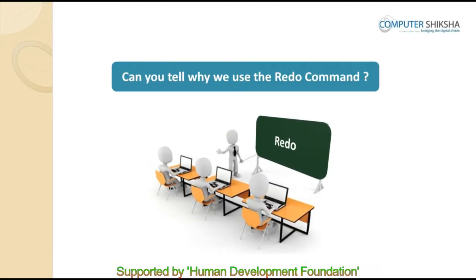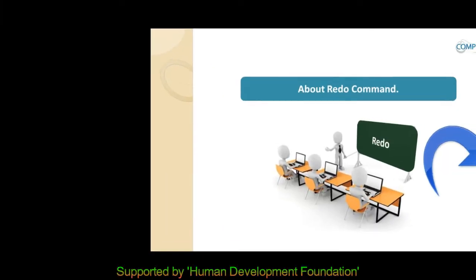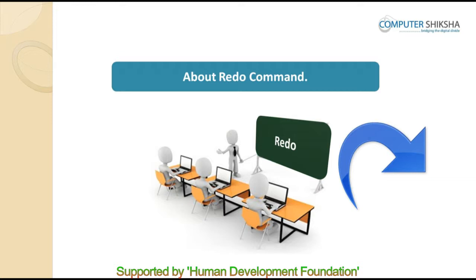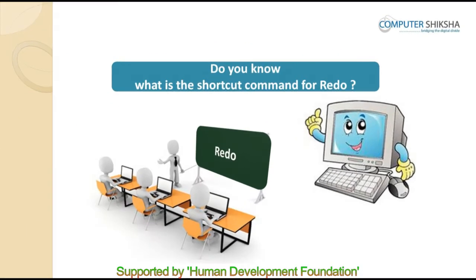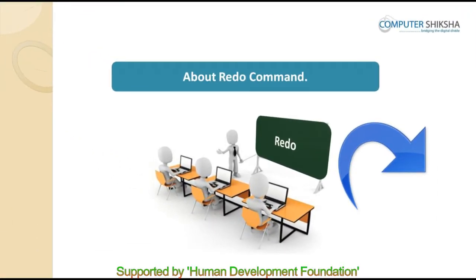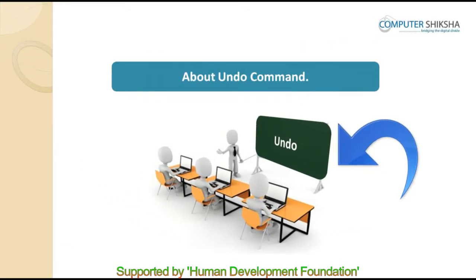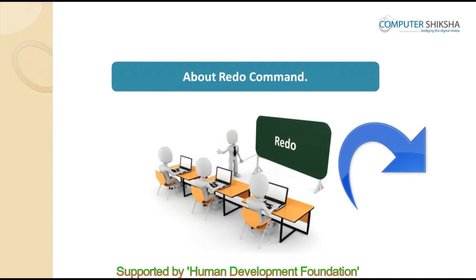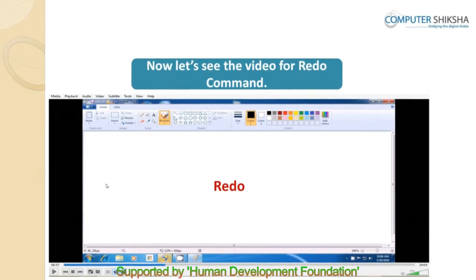Can you tell why we use the redo command? With the redo command, you can bring back the work you had last erased using the undo command. Can you tell what is the shortcut command for redo? The shortcut command for redo is Control plus Y. Redo works exactly opposite to what undo does. While you will use undo to erase something from your drawing, you will use redo to bring the erased part back. We will now learn to use redo with this video.